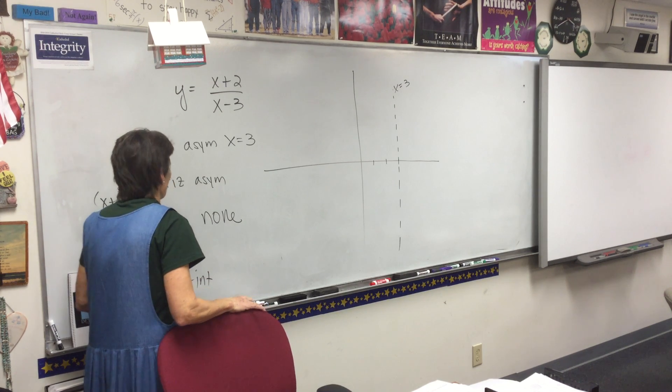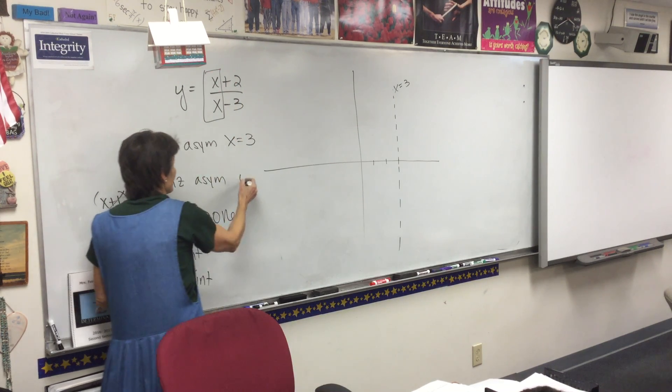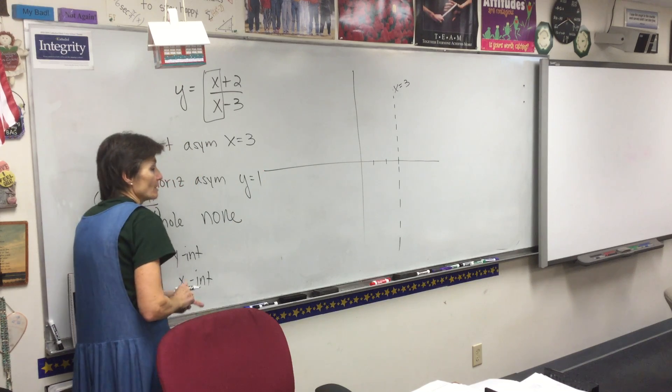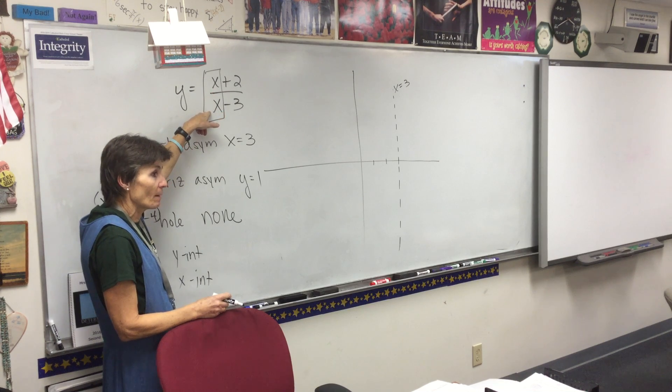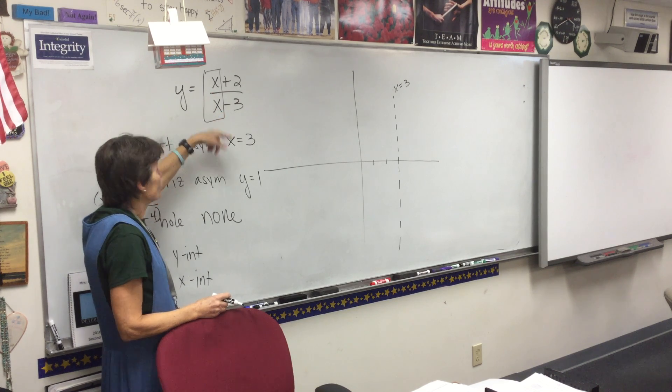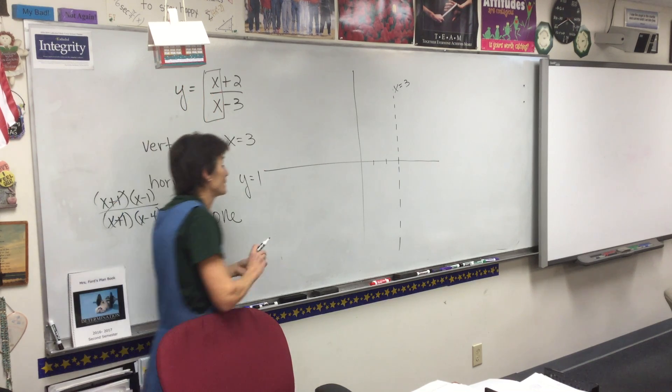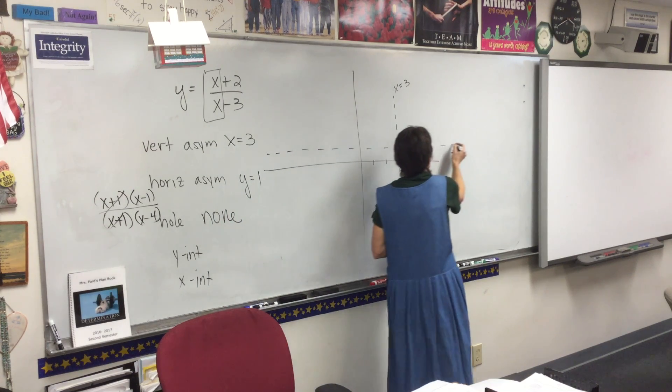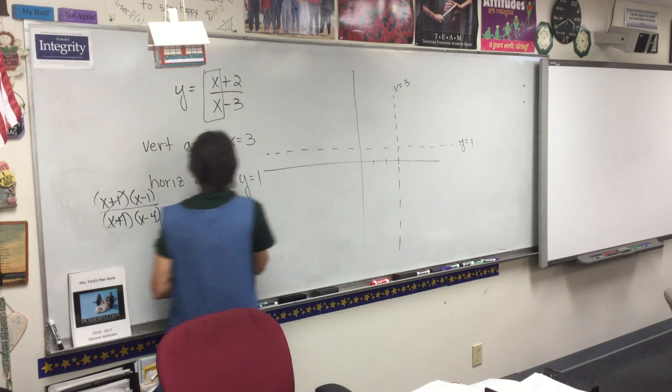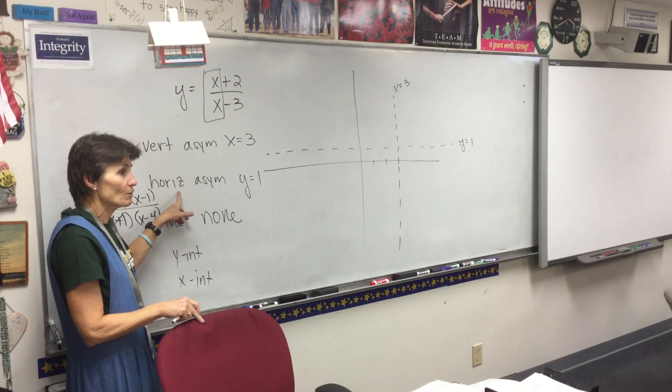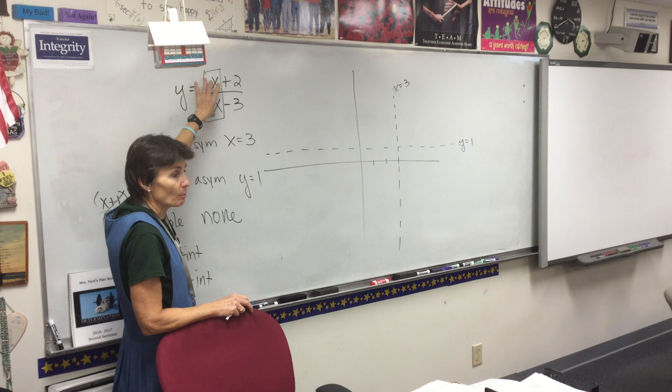Now the horizontal asymptotes, this one is at y equals 1. Do you remember that little trick we did where we compared the x's on the top with the x's on the bottom? And in this case, it's 1x over 1x, so that's just 1. So I have a horizontal asymptote at 1. Again, I hope you're making a little note so that you remember how you did that. We compare the x's in the problem.